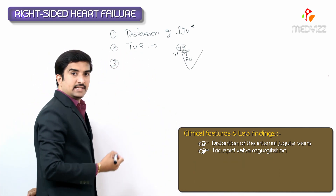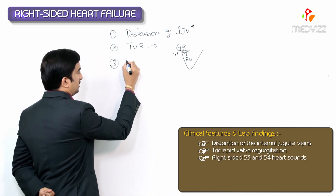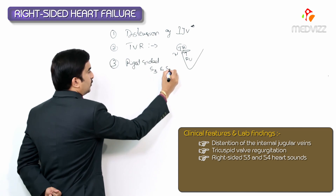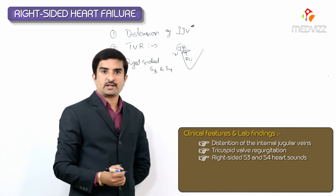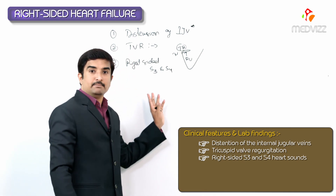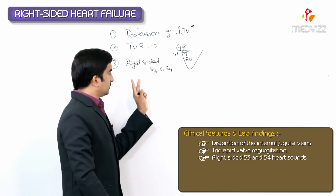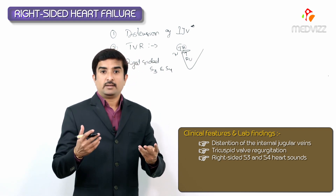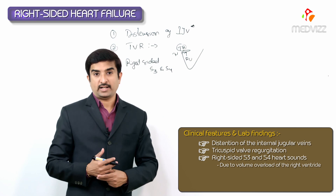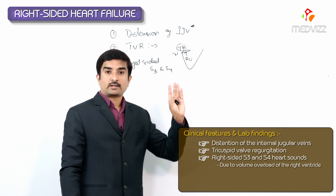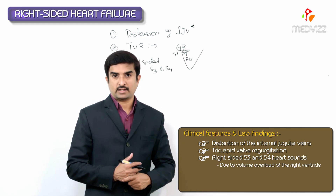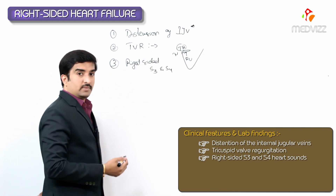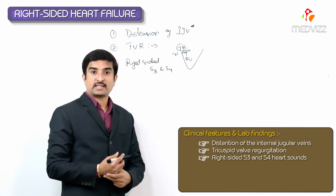Another important finding is right-sided S3 and S4 — third and fourth heart sounds — which are present, producing a summation gallop rhythm. Right-sided third and fourth heart sounds are more commonly heard on the right side of the heart. Both sounds are heard due to the volume overload of the right ventricle.